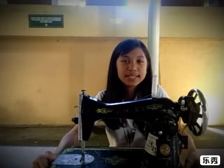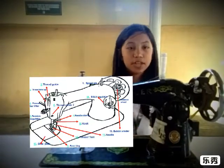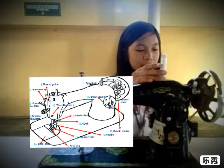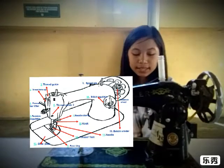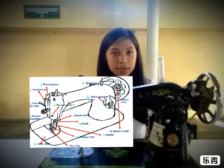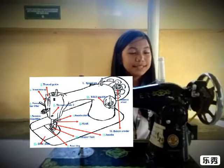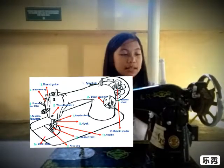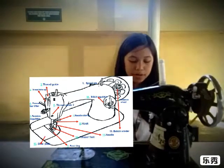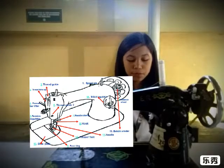The arm consists of 14 parts. The spool pin — the spool pin is the thread holder. The thread guide keeps the thread in position. The take-up lever releases the thread. The pressure bar moves the presser foot.